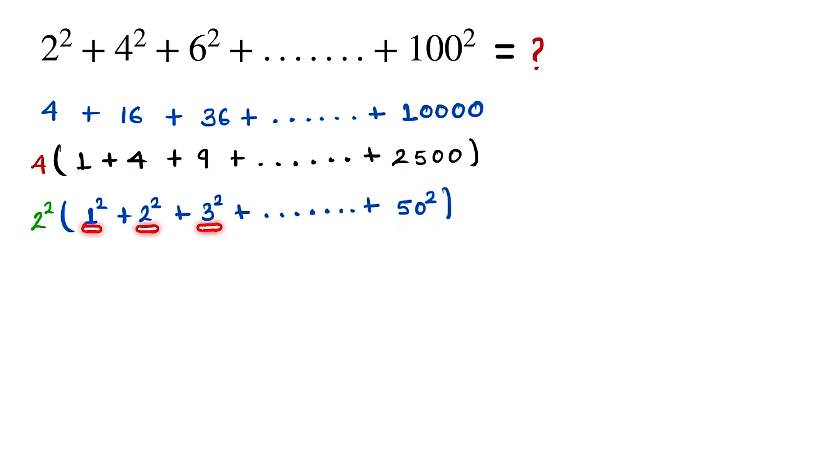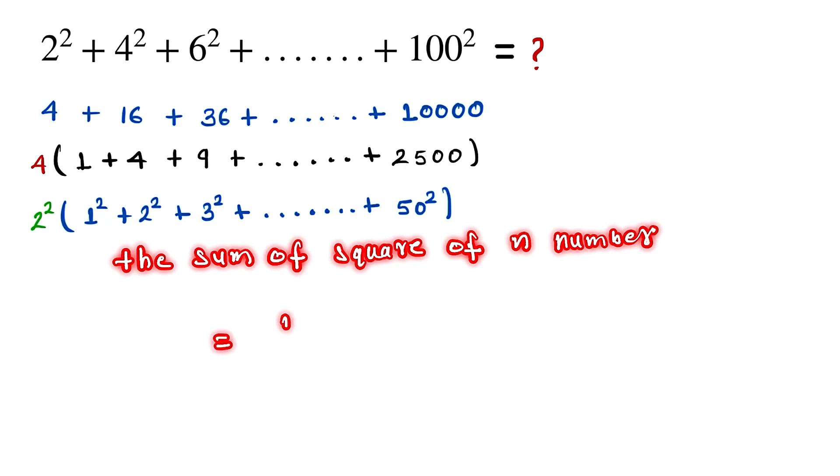The formula is n(n+1)(2n+1)/6. Now we put the value. Here the value of n is equal to 50.